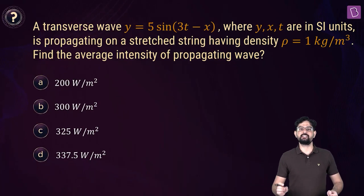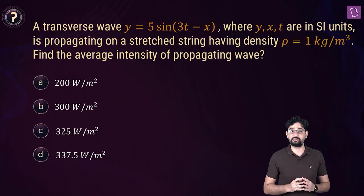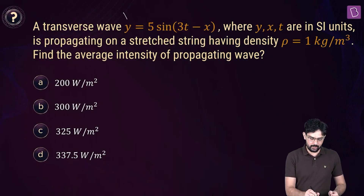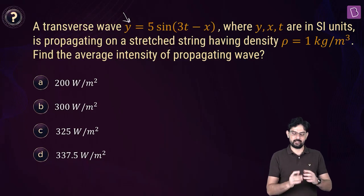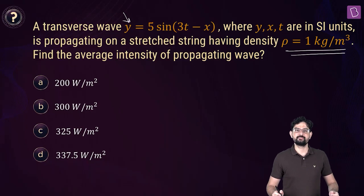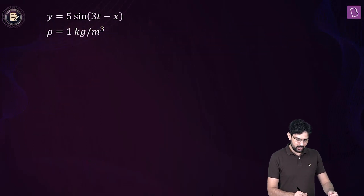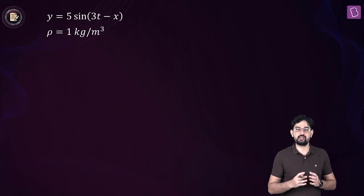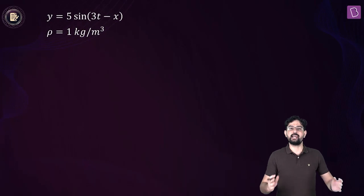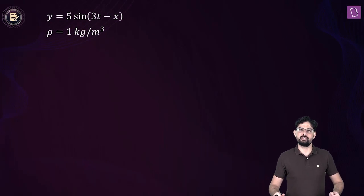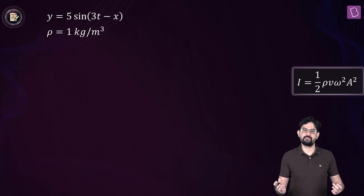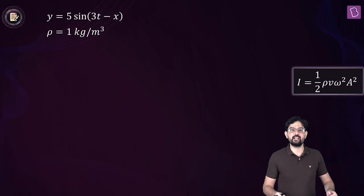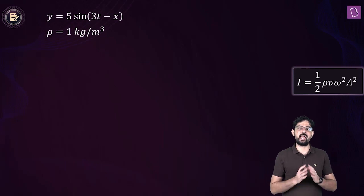Now find the average intensity carried by a transverse wave given by y equals 5 sin(3t minus x), where the density of the string is 1 kg per meter cubed. The average intensity is the average power transmitted per unit area perpendicular to the propagation of the wave, and is given by half rho v omega squared A squared.